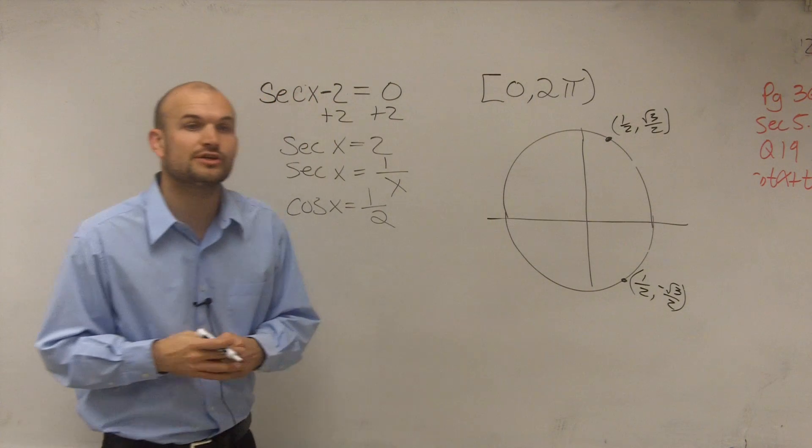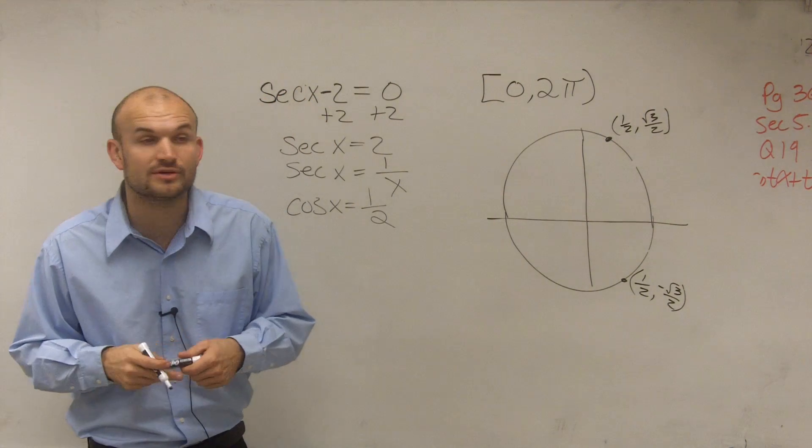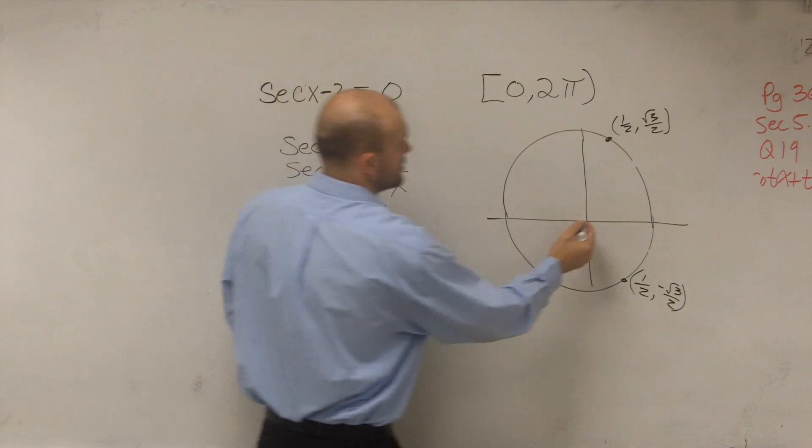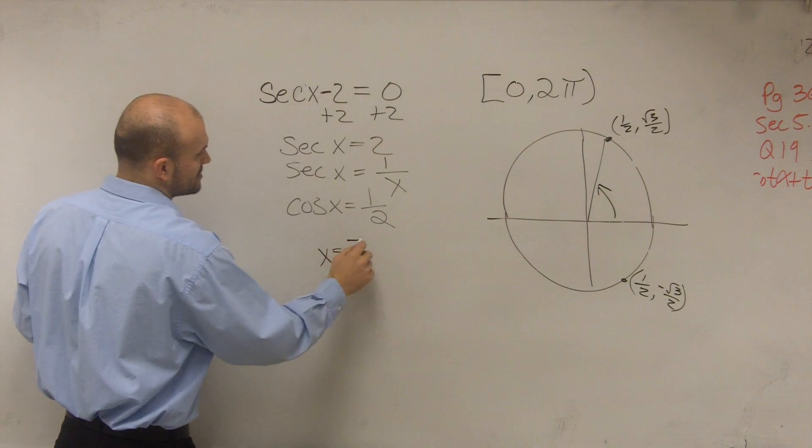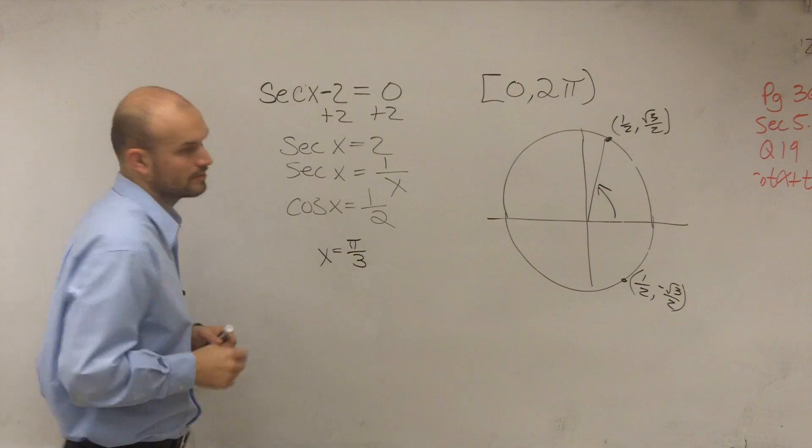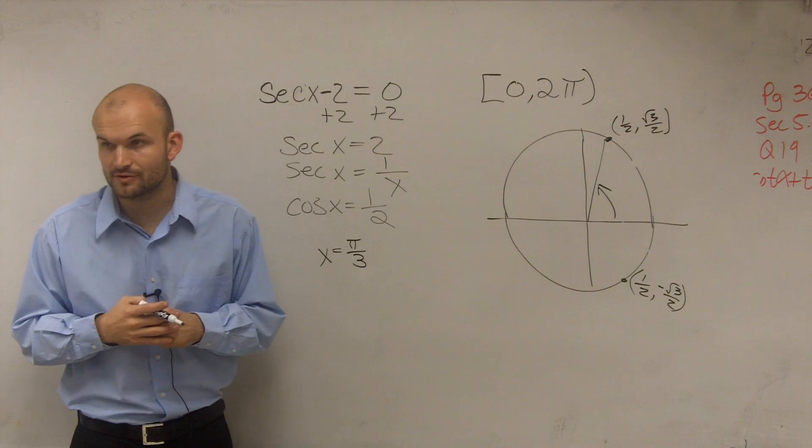So by looking at your unit circle, what you need to do is determine what are these two angles. You have this first angle, which is x equals π over 3.